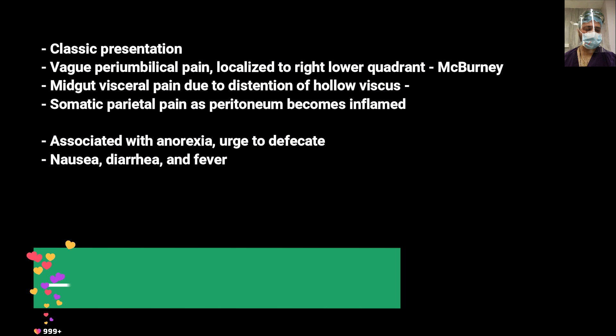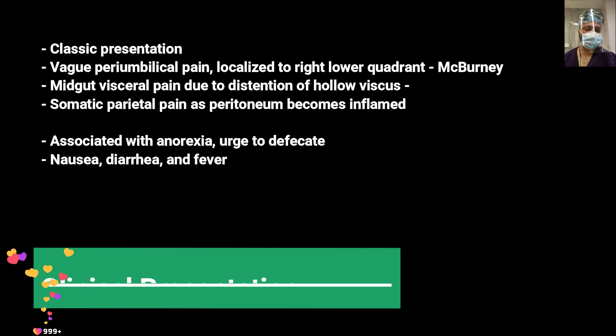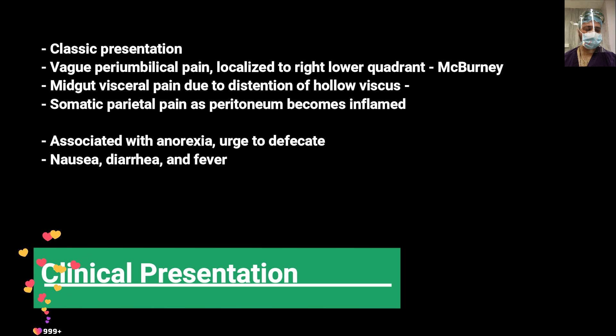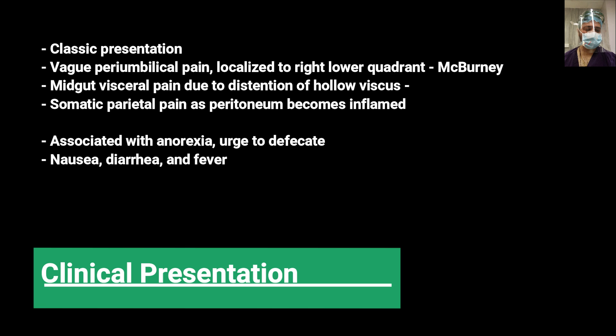The classical presentation of acute appendicitis begins with vague pain, usually in the upper abdomen or periumbilical region. Gradually, as time passes, it localises to the lower abdomen — the right iliac fossa. This is a midgut visceral pain due to distension of the appendiceal lumen, which then localises because of somatic pain from peritoneal irritation. It is usually associated with anorexia, urge to defecate, nausea, diarrhoea, and fever.